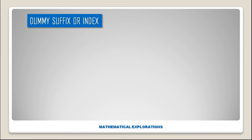Hello everyone, welcome to Mathematical Explorations. Let us consider the term aᵢⱼxⁱ — here i is known as a dummy index, which occurs once in the upper position and once in the lower position, that is, once in superscript and once in the subscript.